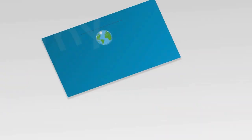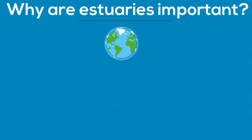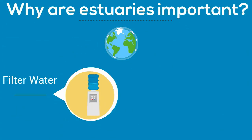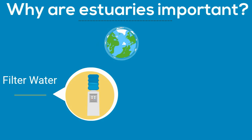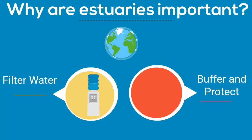Estuaries also help because they filter sediment and pollutants from the water before it flows into the ocean. Estuaries are also important because they buffer the ocean and the land and can help decrease the effects of flooding and storm surges.